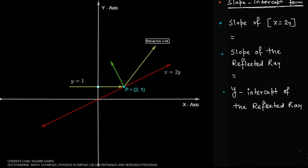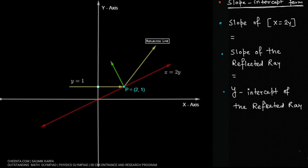We will be using the slope-intercept form of a straight line. First we have to find the slope of x=2y, then we need to find out the slope of the reflected ray and the y-intercept of the reflected ray.